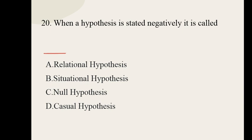Question number twenty. When a hypothesis is stated negatively, it is called: relational hypothesis, situational hypothesis, null hypothesis, casual hypothesis. And the correct option for question number twenty is null hypothesis.